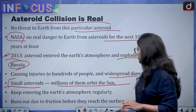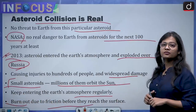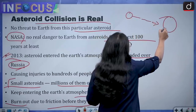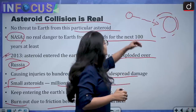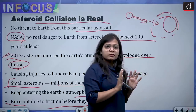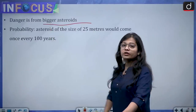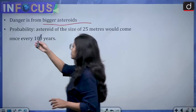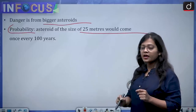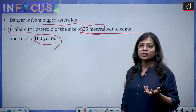Small asteroids keep entering Earth's atmosphere on a regular basis, but they burn out due to friction before they reach the surface. As a small asteroid enters, friction causes it to start burning and it destroys itself, causing no damage to Earth. But the danger is from bigger asteroids. The possibility is that an asteroid of 25 meters in size could come once every 100 years, and 25 meters is a lot — such an asteroid has the capability to cause widespread damage.